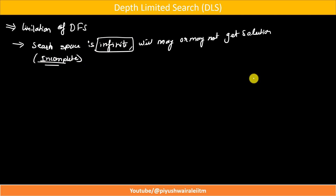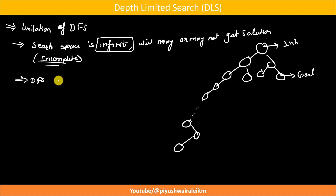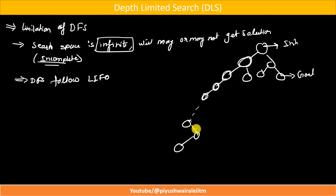So what happens in DFS with infinite search space? Suppose this is my initial state and this is my goal state. DFS follows the Last In First Out (LIFO) principle. According to this principle, it will try to explore a particular node and keep following that particular path — exploring this node, then this node, then this node.